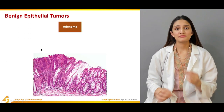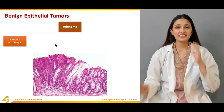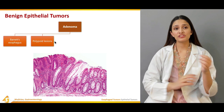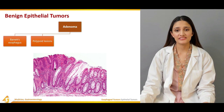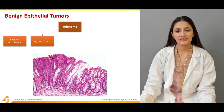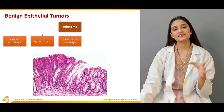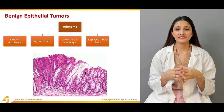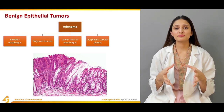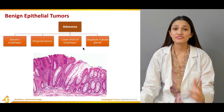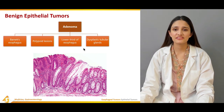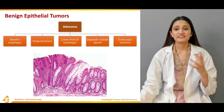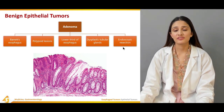The second type of benign epithelial tumor is adenoma, which is exclusively associated with Barrett's esophagus and gastroesophageal reflux disease. It has a polypoid lesion and is usually present in the lower third of the distal esophagus. Histologically, it contains dysplastic tubular glands. Because of its malignant transformation potential, endoscopic resection is considered for patients with adenoma.